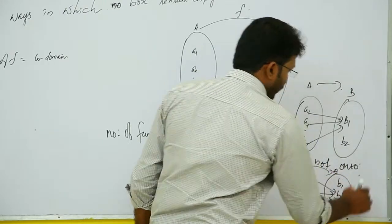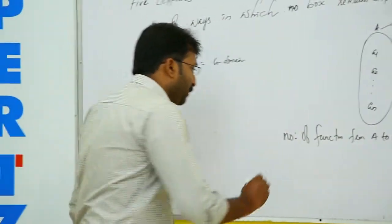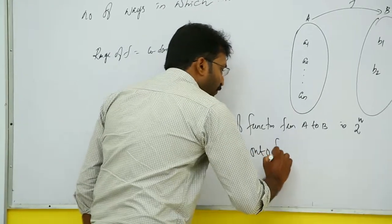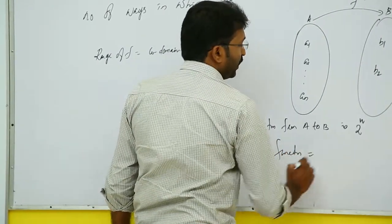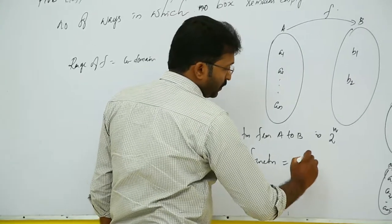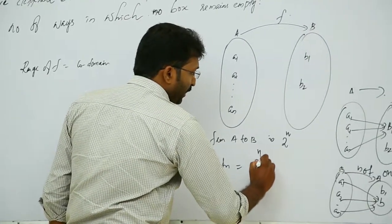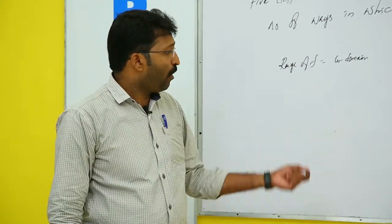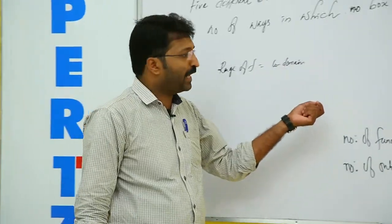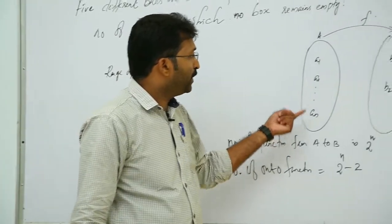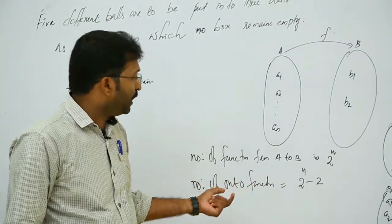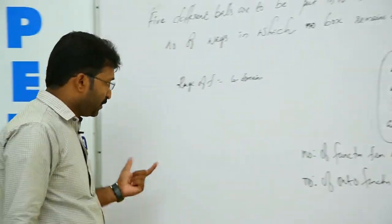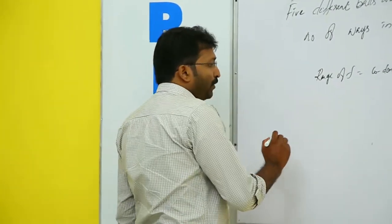This function is not onto. Therefore, the number of onto functions is equal to 2^n minus 2. So the number of onto functions from a set containing n elements to a set containing two elements is 2^n minus 2.